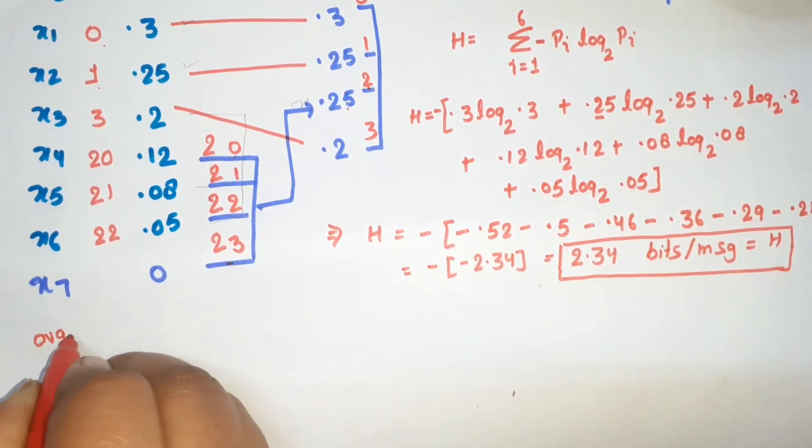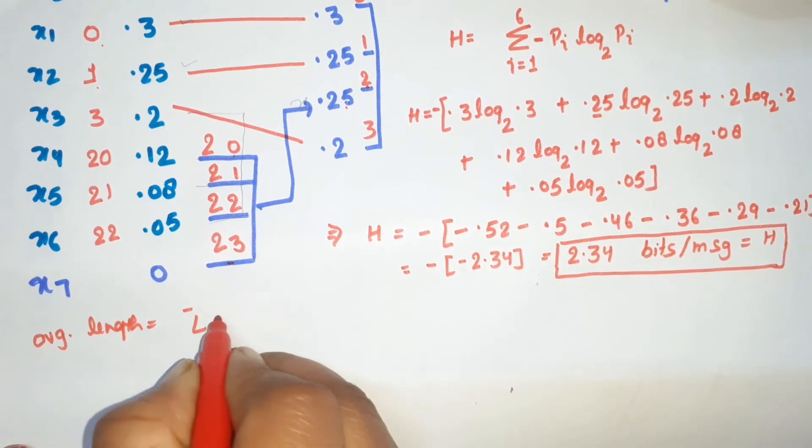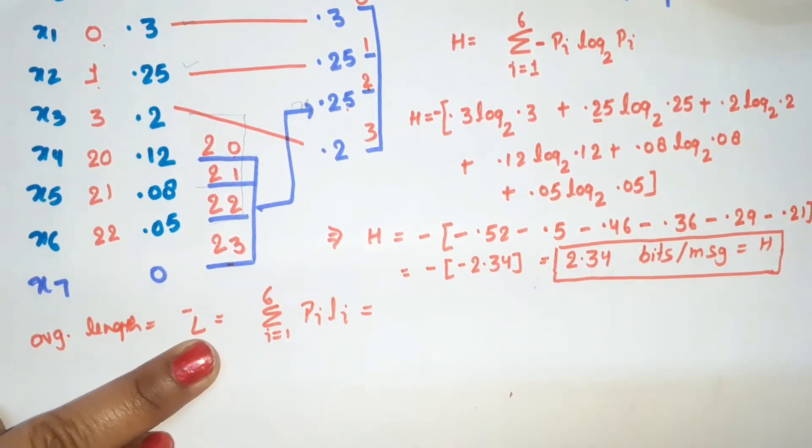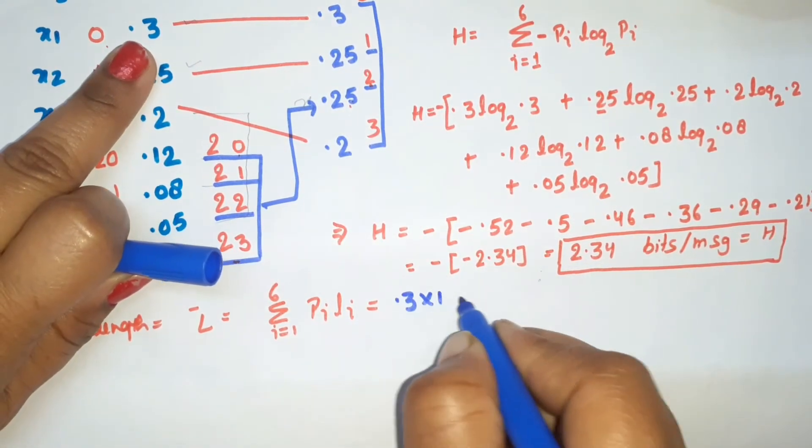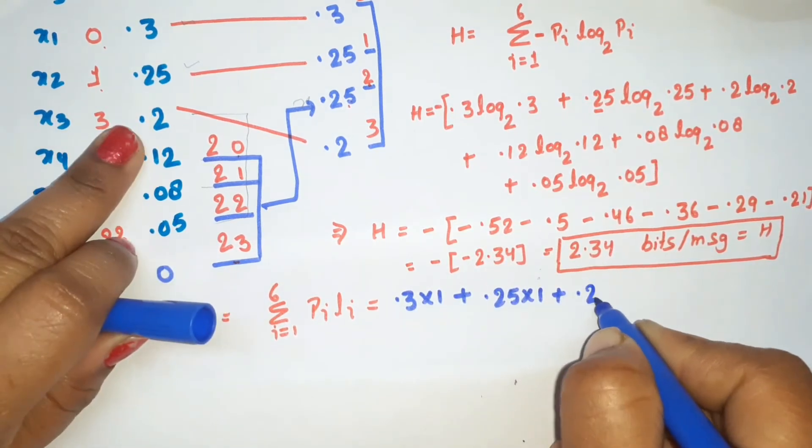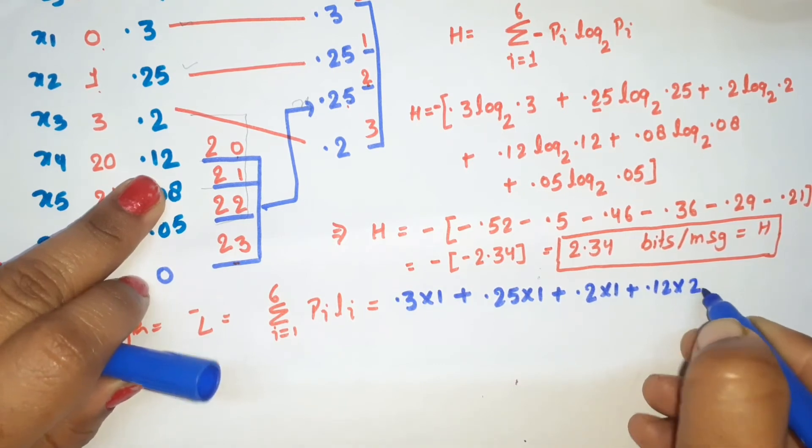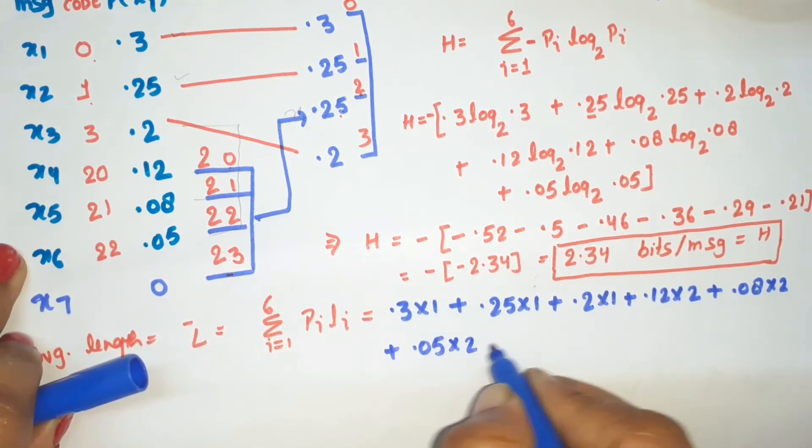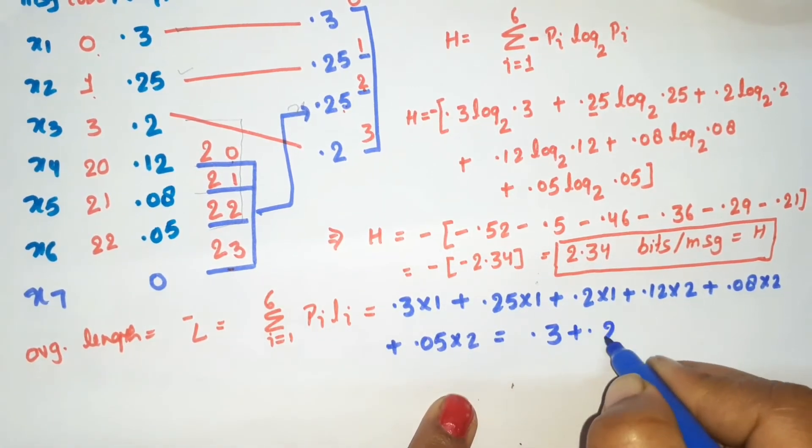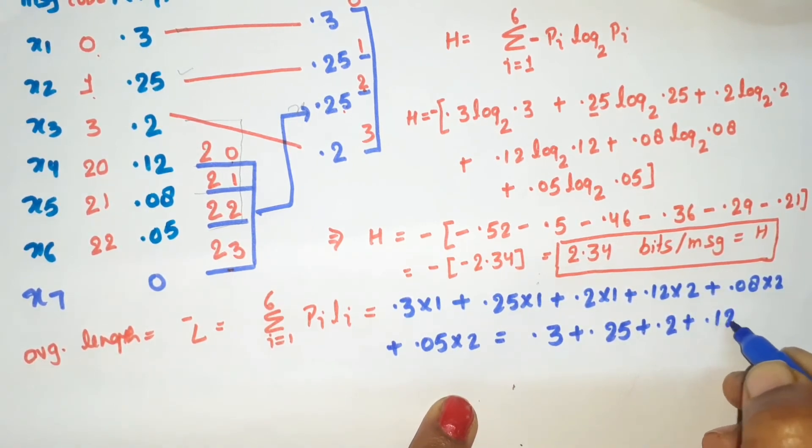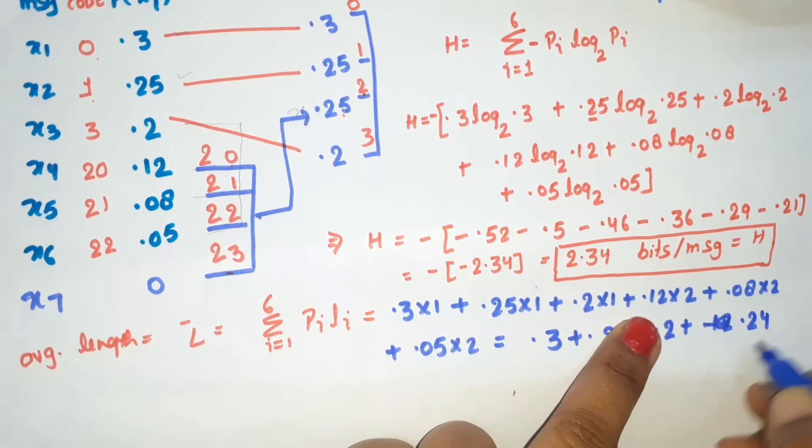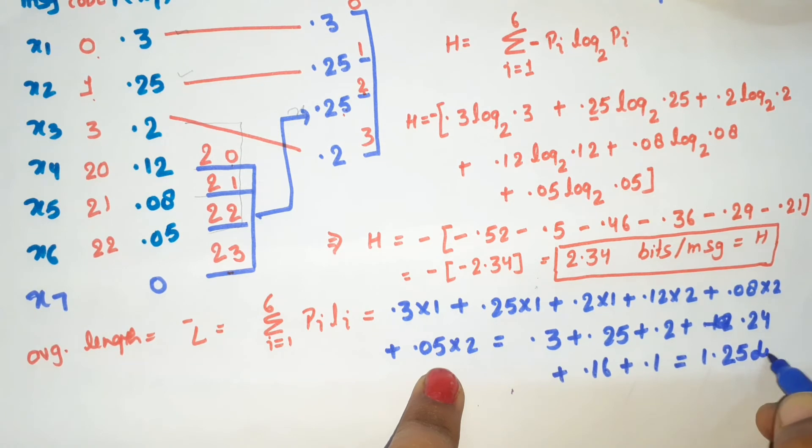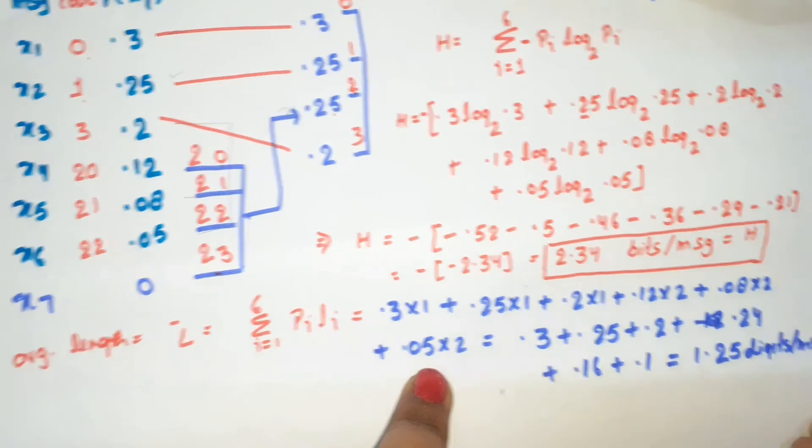Now average length: L̄ = Σ(pi × li) for i = 1 to 6. Putting the values: L̄ = 0.3×1 + 0.25×1 + 0.2×1 + 0.12×2 + 0.08×2 + 0.05×2. This equals 0.3 + 0.25 + 0.2 + 0.24 + 0.16 + 0.1 = 1.25 digits per message.